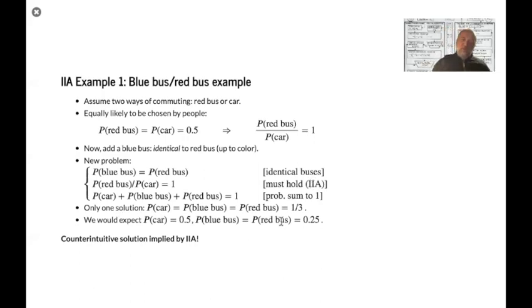We can calculate the ratio between the red bus and the car that was one, that must hold because of IIA. That was the same as we started assuming. That must hold because remember, we just added an irrelevant alternative and none of the attributes of the blue bus is going to affect this difference. So it must not have changed. So this still holds because of IIA, because of the independence of irrelevant alternatives.